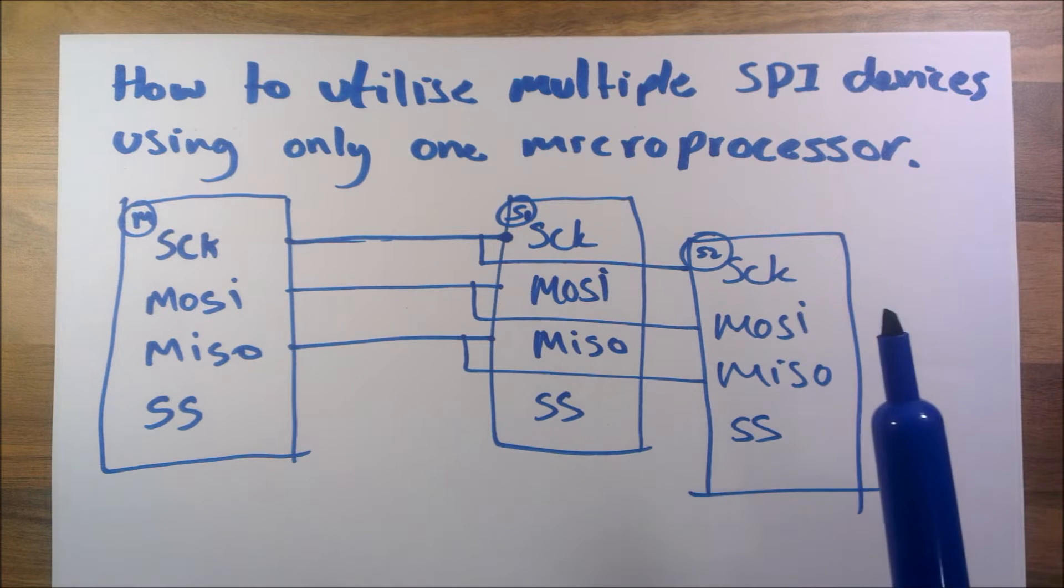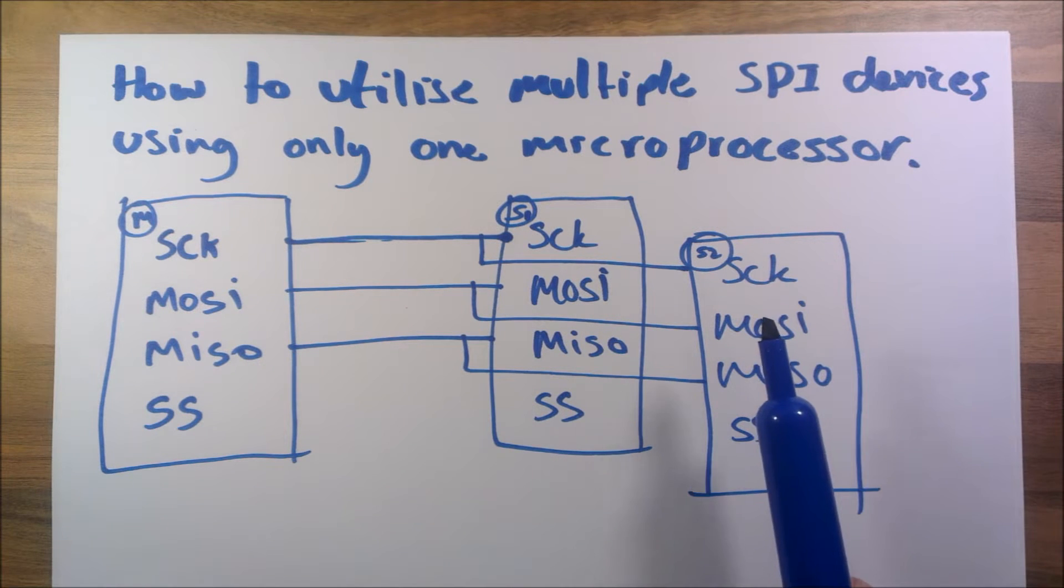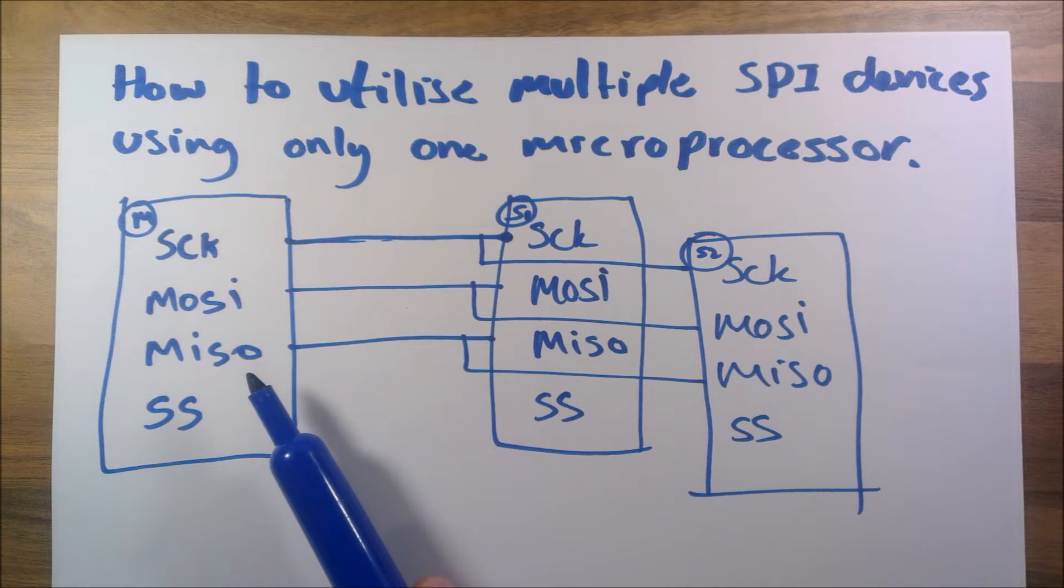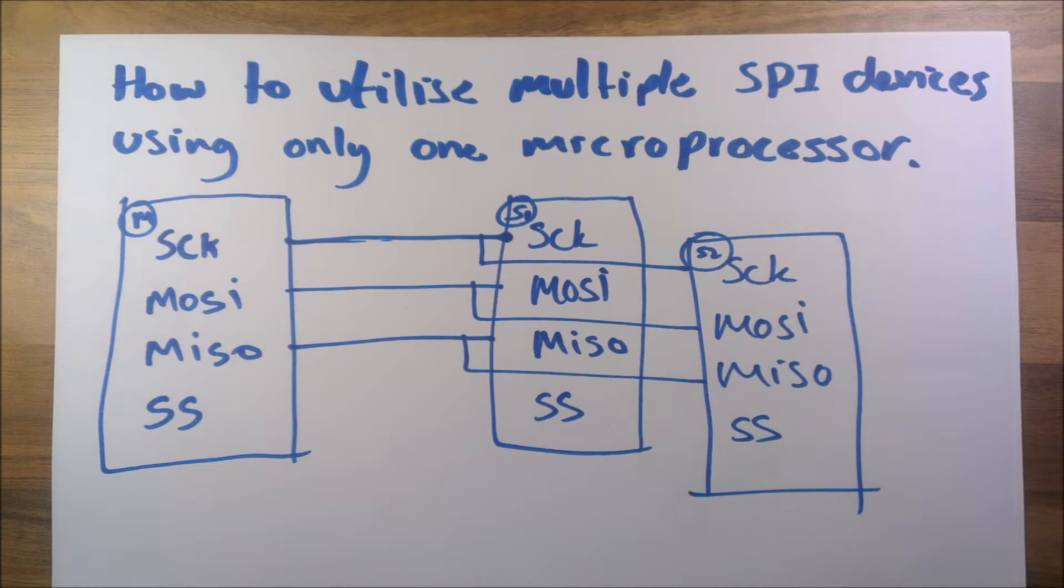If you try and connect two devices together using SPI, usually you'll have no problems. But if you connect another one to the system, you'll usually find that either it doesn't work or that you get garbled data read into the microprocessor.